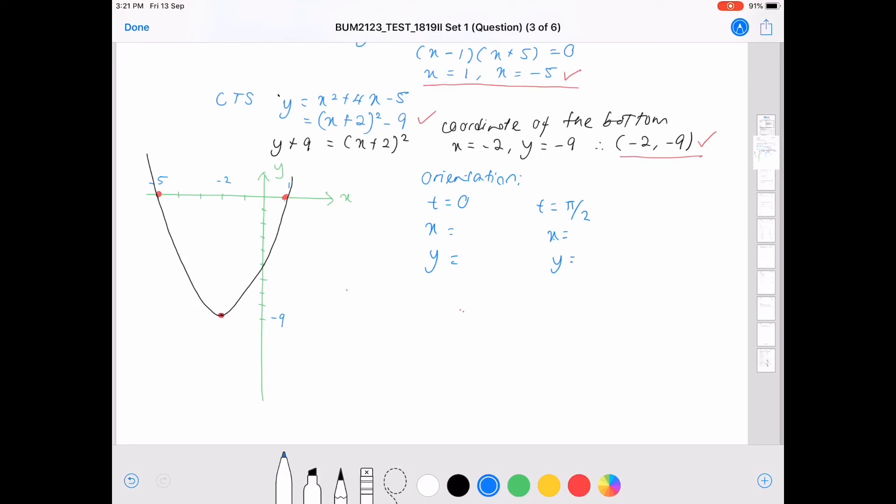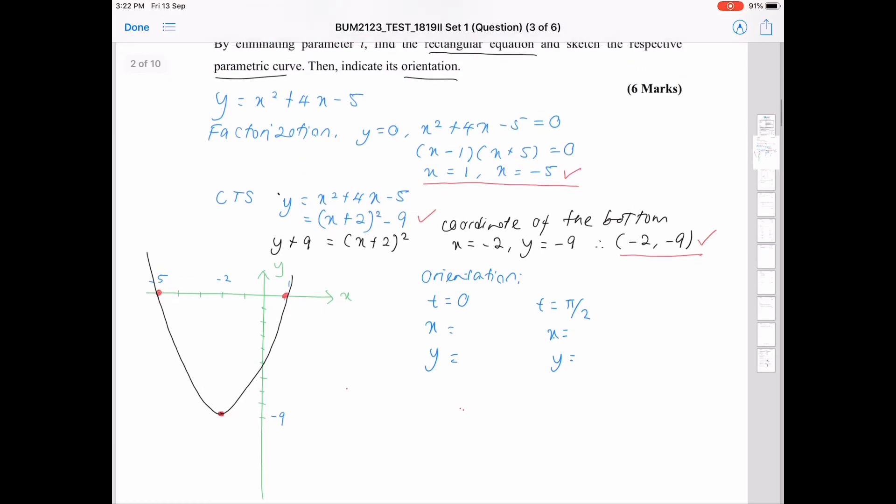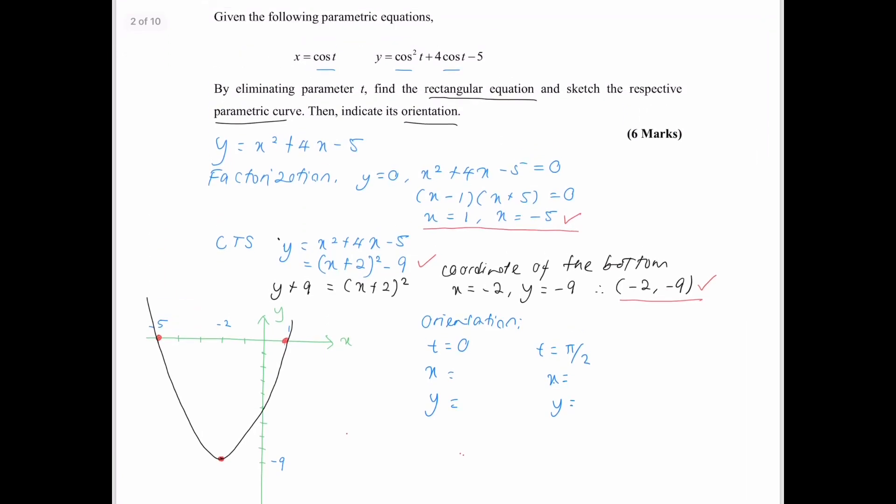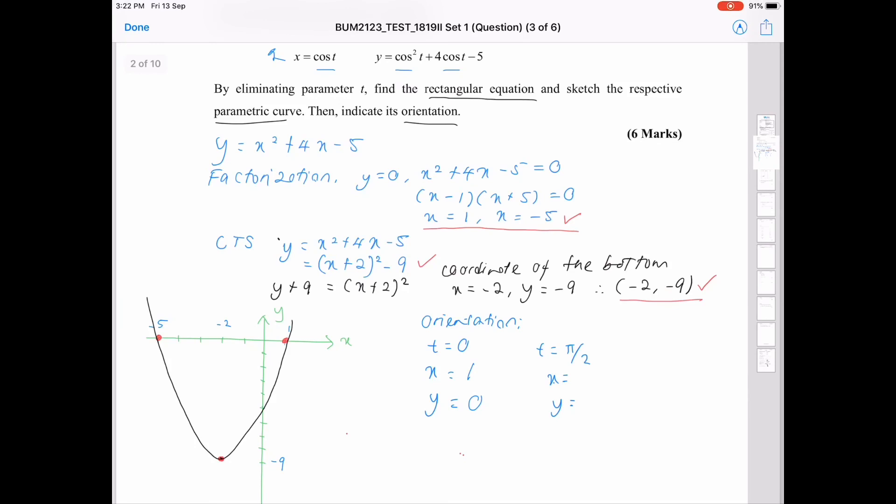Okay, when t equals to 0, so the x just now, we have to recall back the equation, the parametric equation. So, here. So, here, you have to check x equals to cosine 0. So, 1. And then, y. 1 squared, which is 1, plus 4, 5, minus 5, 0. And then, how about pi per t? Cosine pi per 2 equals to 0. And then, 0 times 0, minus 5. So, y equals to minus 5. So, this is the coordinate.